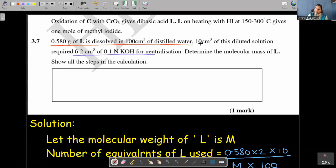And it is already been said here that the acid is a dibasic. So for this acid L, n-factor has to be 2. And for KOH, we know n-factor is going to be 1. Determine the molecular mass of L. Show all the steps in the calculation.